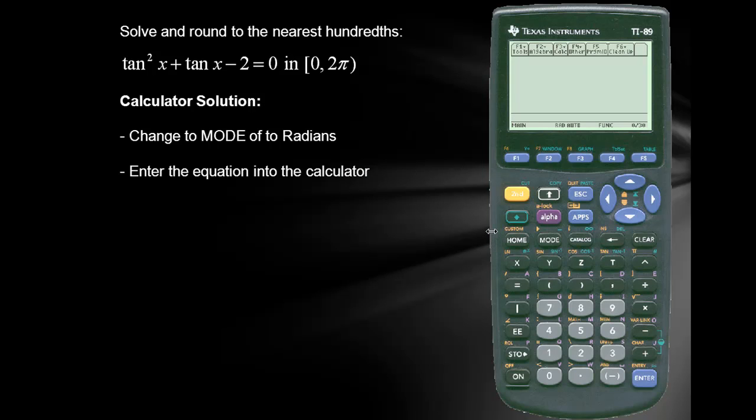Next we'll enter the equation into our calculator. So we'll use the y equals which is a blue function. I'll put in our function the tangent which is a yellow function of x, and now we'll square it plus the tangent of x. Again we'll close off the argument for tangent minus 2.